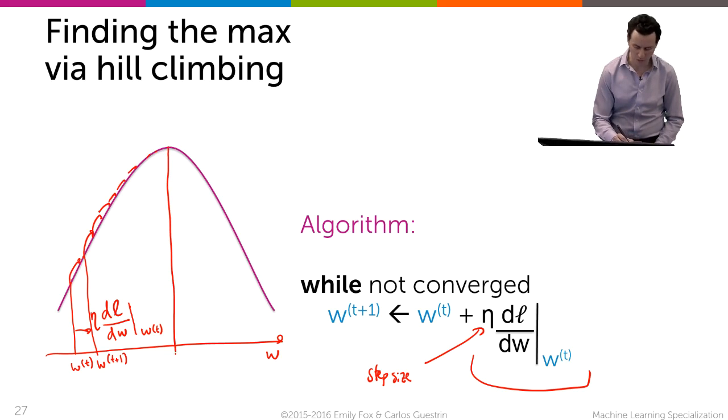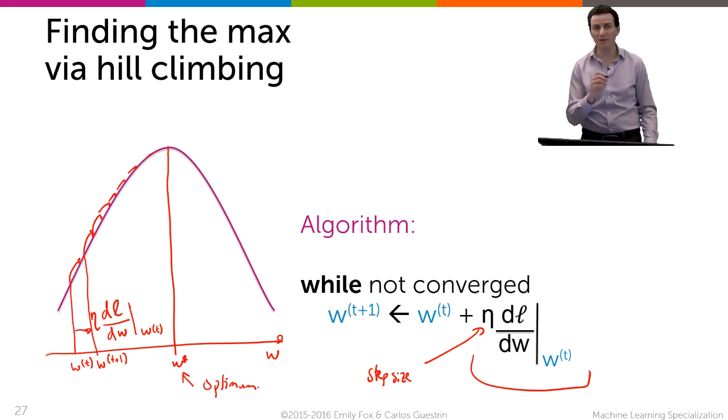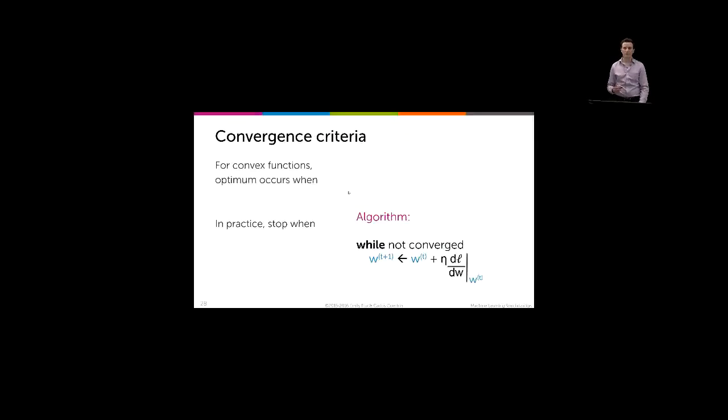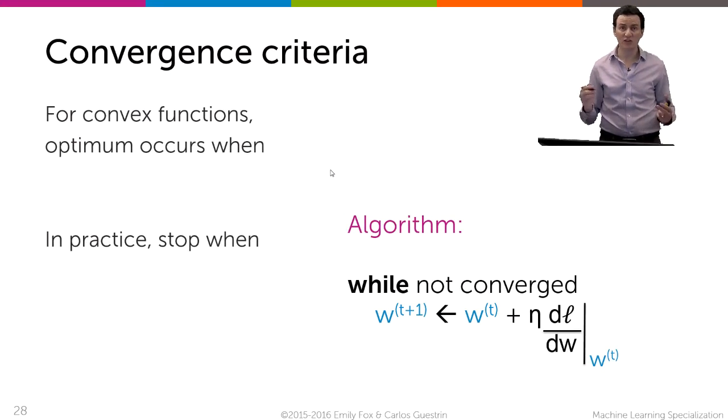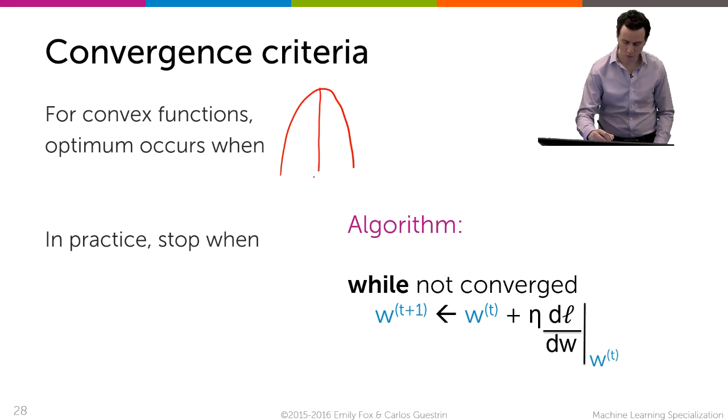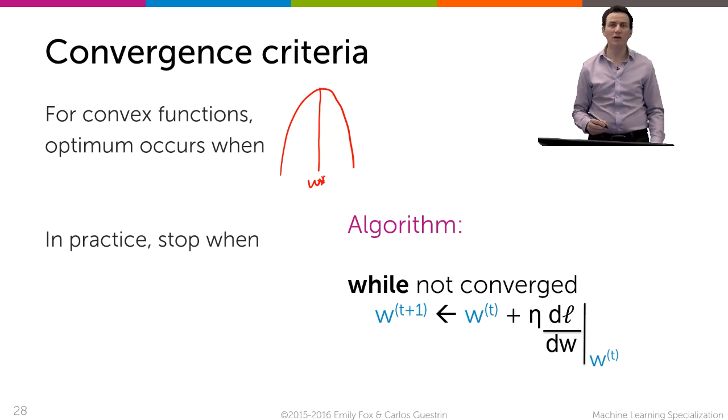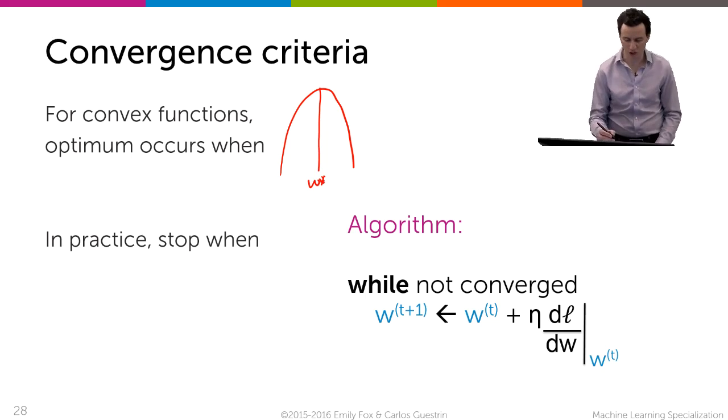And eventually you get to the top of the hill, to the optimum, which maybe we're going to call w* for right now. And this is our goal, to get to that very top of the hill. Now that we've seen kind of hill climbing in the abstract way, getting to that top of the hill, so we step up until we hit the top here which is w*, we can talk about when we know we're done in this iterative algorithm, when have we converged.